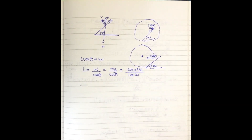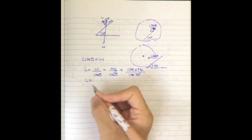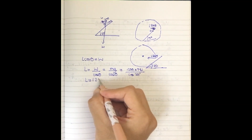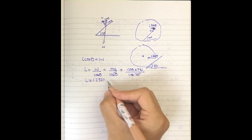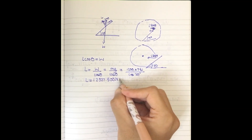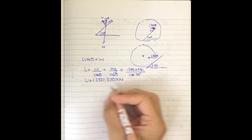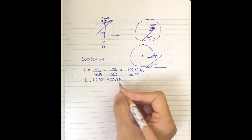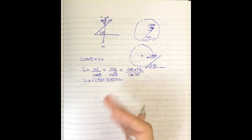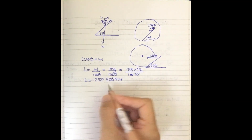Inputting the values: L = 1200 × 9.81 / cos(20°). This gives a lift value of approximately 12,527.5. Make sure not to round this off yet, because we need an accurate value for the next step.